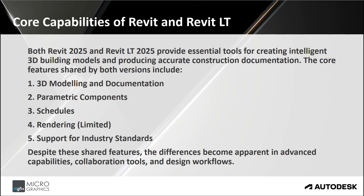Both Revit 2025 and Revit LT provide essential tools for creating intelligent 3D building models and producing accurate construction documentation. The core features shared by both versions include 3D modeling and documentation — both allow the creation of parametric 3D models used to generate coordinated 2D drawings automatically. Users can produce floor plans, sections, elevations, and schedules derived directly from the 3D model, with the ability to create callout views and add detailing in a 2D environment such as drafting views, detailed views, or legends. This includes keynotes and structured symbol families with parametric data like assigning materials and adding labels to elements.